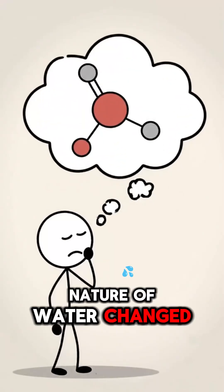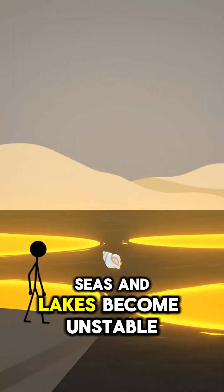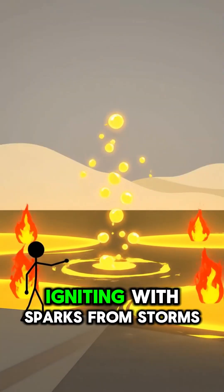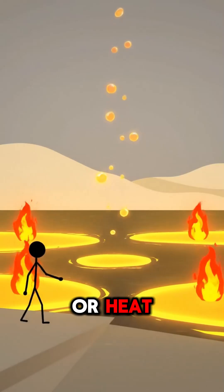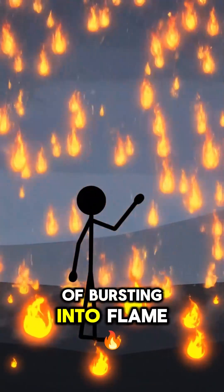What if the chemical nature of water changed and suddenly it became a flammable liquid? Seas and lakes become unstable, igniting with sparks from storms or heat. Raindrops that once cooled the earth now carry the risk of bursting into flame.